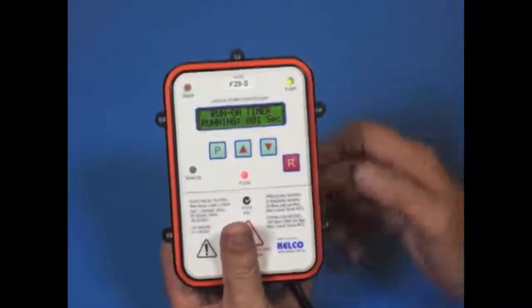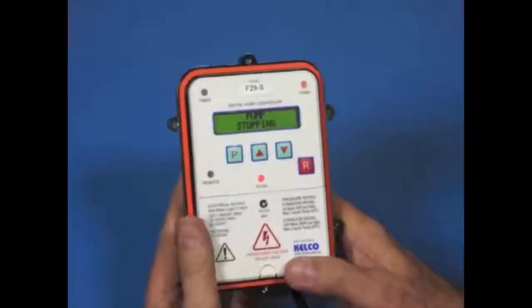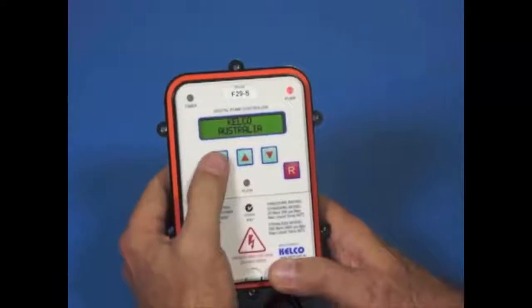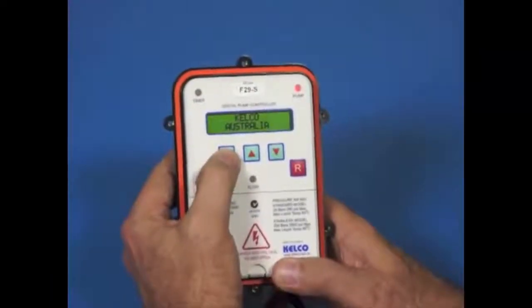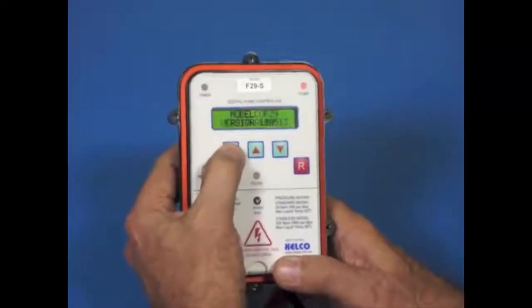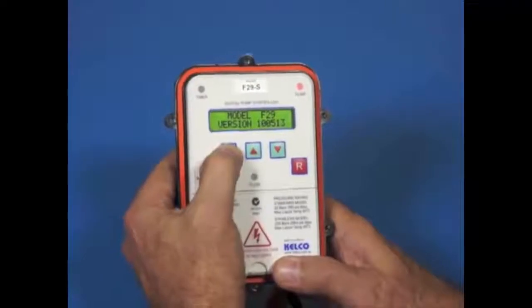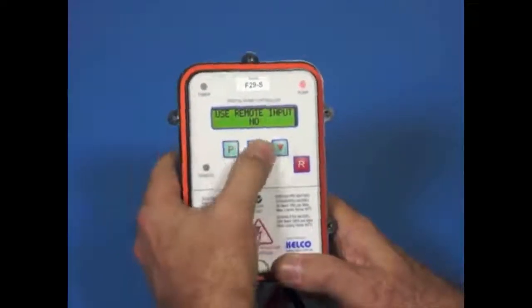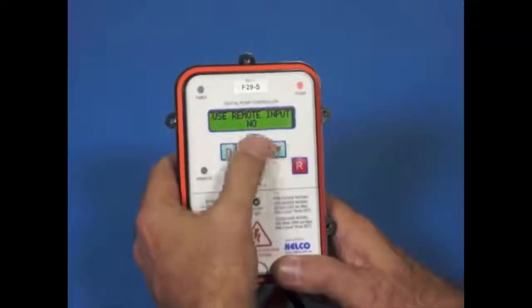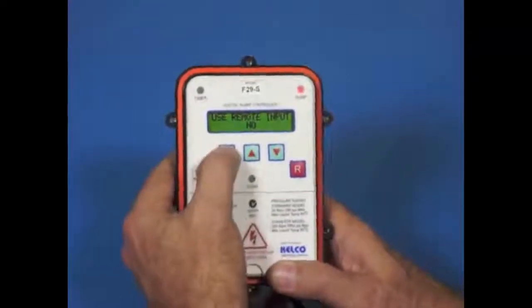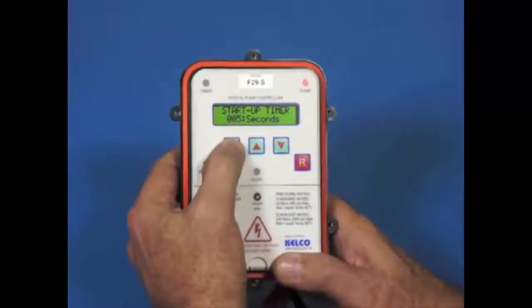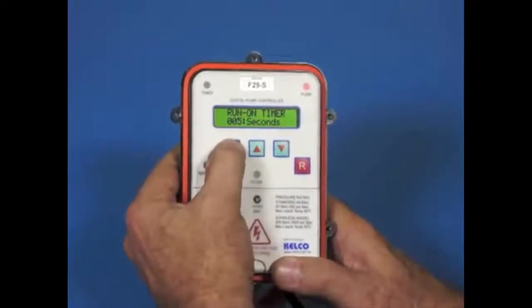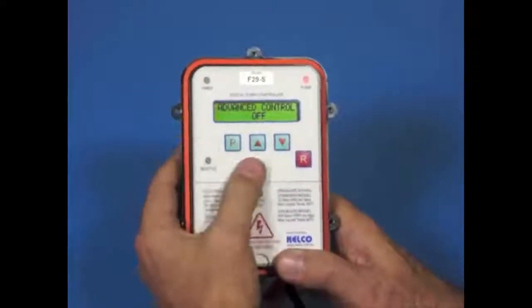If we want to change those settings here, all we do then is press the P button to enter programming, like that, and then press it again to step through the menu until we get to the parameter we want to change. So we just press it. It'll display the model number and the version. It'll ask us if we want to use a remote input. Using the up or down buttons here, let's just select yes or no to these questions as they come up. In this case, no. Our start-up timer there is set to five seconds. Our run-on is set to five seconds. There are the default settings. And the advanced controls are off. So we might turn the advanced controls on.